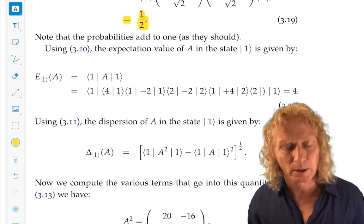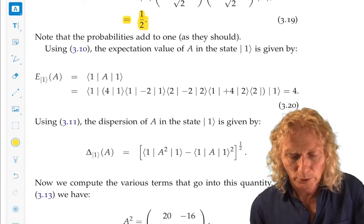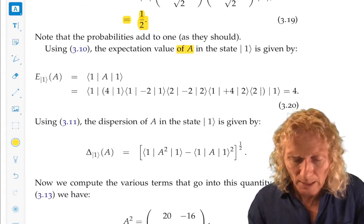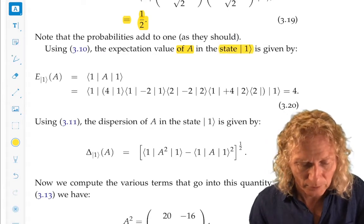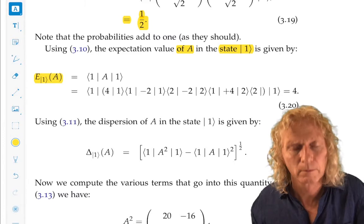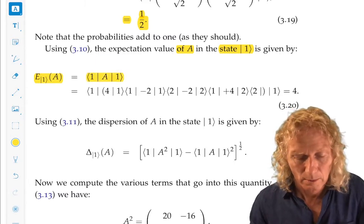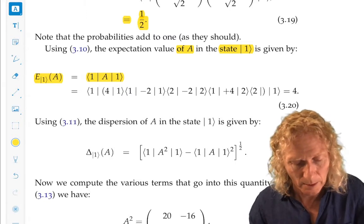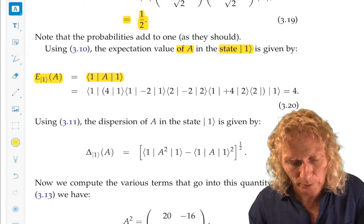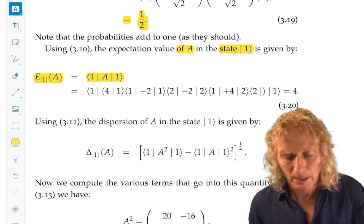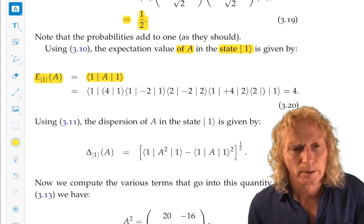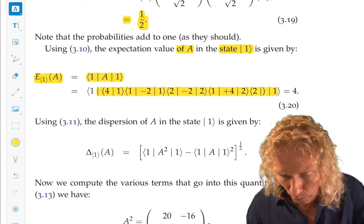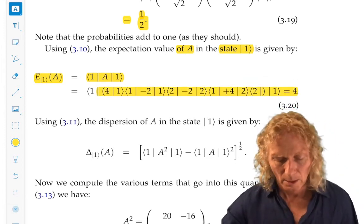Now let's look at expectation values. Suppose we want to compute the expectation value of A, that's our operator, self-adjoint operator, in the state 1. Well, that's the general notation we've adopted. And here you have bra 1, ket 1, with A in the middle. Well, now you can just write down the spectral representation for A, as we wrote it earlier, in the ket 1, ket 2 basis. And if you work this out, and I urge you to, you're going to get 4.